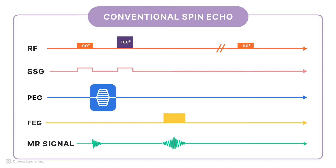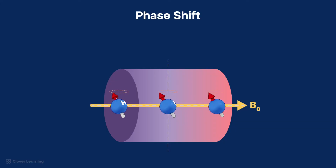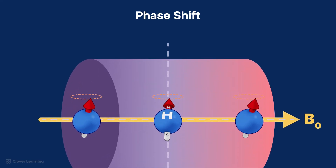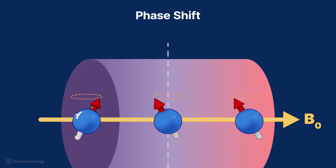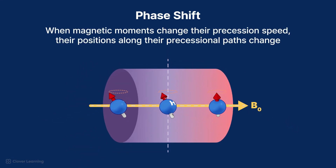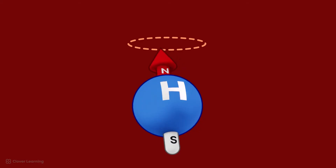This gradient is turned on just before the 180 degree rephasing pulse in a spin echo sequence, and briefly turned on between the excitation pulse and the signal acquisition in a gradient pulse sequence. When the phase encoding gradient is applied, it causes the spins of the magnetic moments in different locations along the gradient to precess at different rates, depending on their position along the gradient axis. As the magnetic moments change their precession speed, their frequencies change as well. This is called phase shift.